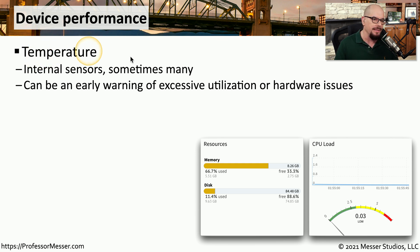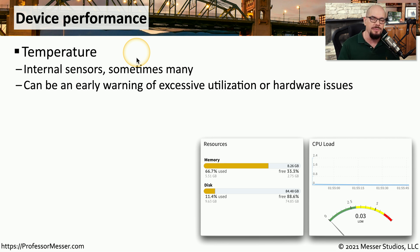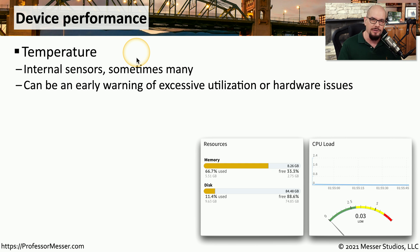We can start by looking at the temperature inside of a device. Many of these infrastructure components have temperature sensors inside of them, and some have multiple sensors so you can see the difference between CPU temperature and the temperature of the air passing through the system. If you notice a trend where the temperature seems to be rising or going higher than normal, this might indicate a hardware problem or software issue. It's important to monitor this over time and compare what's happening today with what the temperature was a week or a month ago.